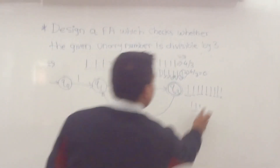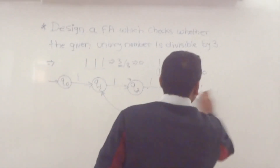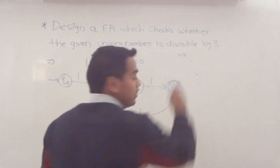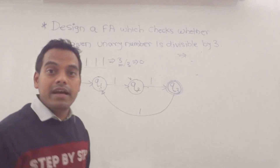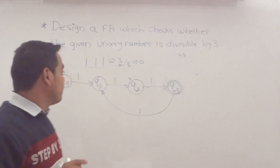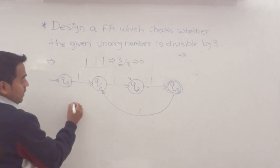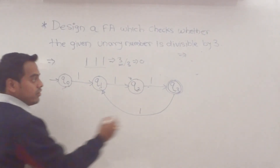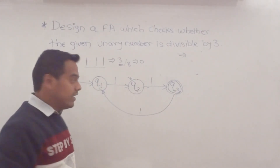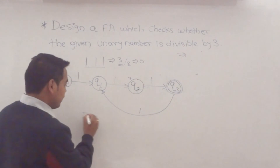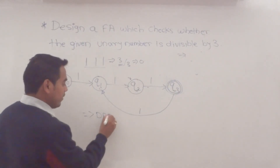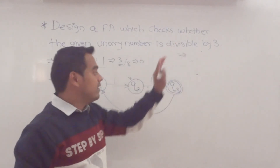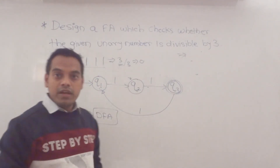This is the finite automaton which accepts only those strings where the unary number is divisible by 3. We have the initial state as q0 and final state as q3. This is the final DFA for checking if a unary number is divisible by 3. Thank you.